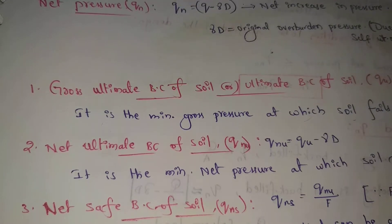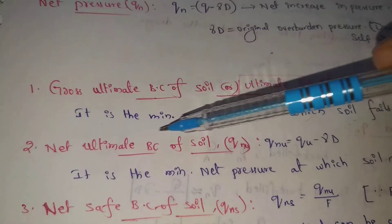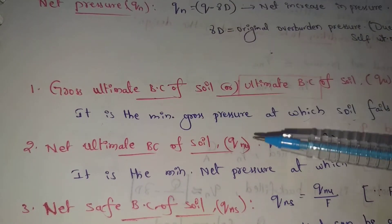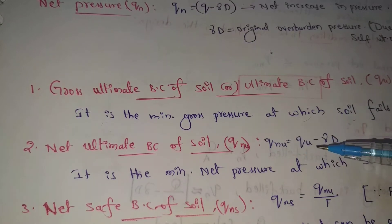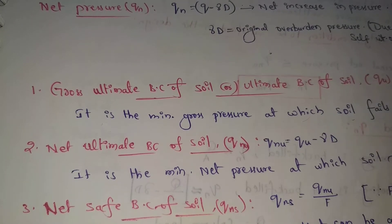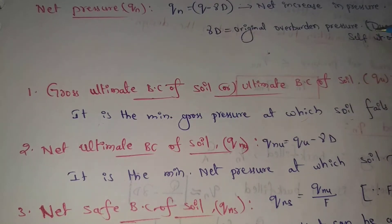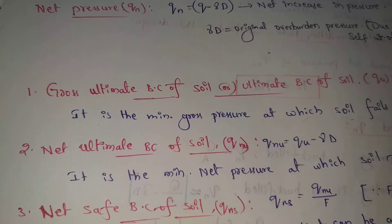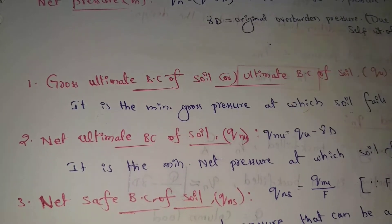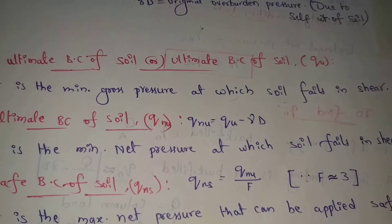I can add the net pressure. Small q and net ultimate bearing capacity of soil. Small q_nu equal to small q_u minus gamma d. Small q_u means gross ultimate bearing capacity of soil minus gamma d. Gamma d means original overburden pressure. Original overburden pressure due to self weight of soil. So net ultimate bearing capacity of soil.